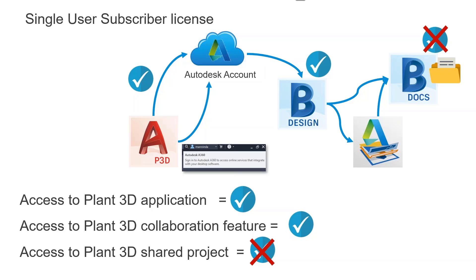Docs is entitled under BIM 360 Design for the purpose of collaboration. You need to have permissions to see and download the files in that folder. The easiest way to verify this is to open a web browser and make sure you can see the project XML in the folders. If you can't see it there, then you certainly can't open it in Plant3D. Once you've got that, all the Swiss cheese holes line up, and you should have no problems getting your project to work in a collaboration environment.